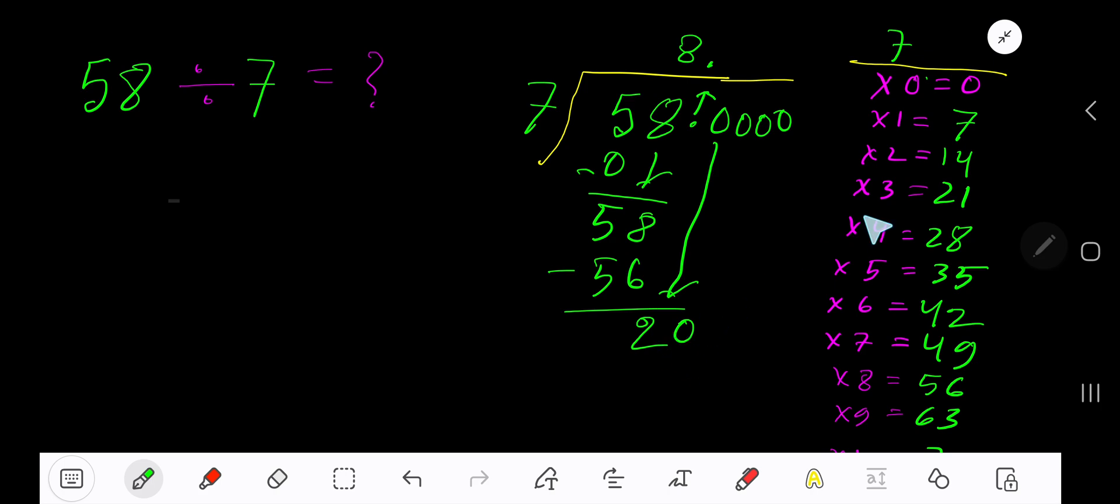2 times. 2 times 7 is 14. Subtract to get 6. Bring down another 0. 7 goes into 60 how many times? 8 times. 8 times 7 is 56. Subtract to get 4.